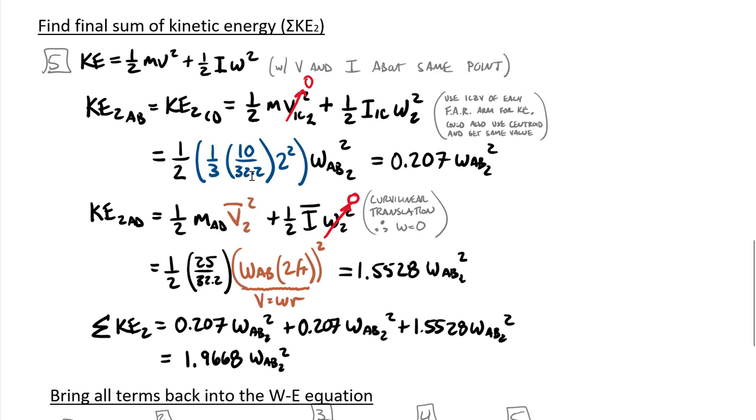We have one-half times I. I use the one-third—keep in mind this is a pound-force divided by gravity, gives me a mass equivalent to slugs. The length was 2, I square that, and so I get a coefficient here of 0.207 and then omega AB sub 2 squared, my final angular velocity squared.